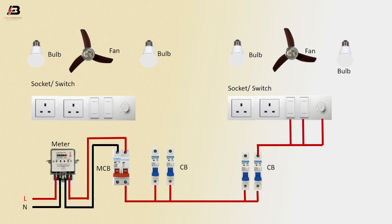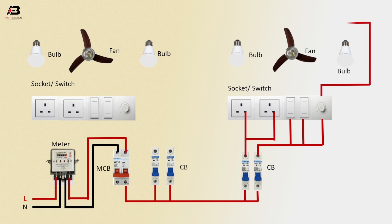Phase connection from the circuit breakers connects to: regulator, switch, socket, and phase point. Phase connection output from the regulator connects to the fan. Phase connection from the switch connects to a bulb. Phase connection from another switch connects to another bulb.